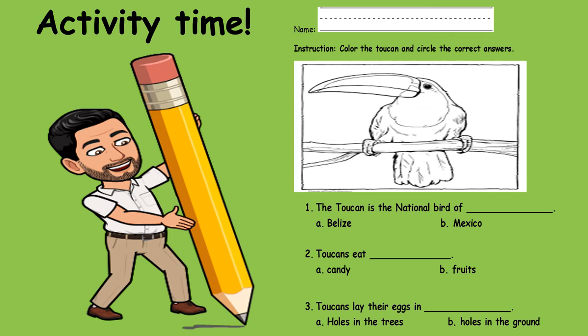Let us go to the instructions. Instruction: Color the toucan and circle the correct answers. Color the toucan and circle the correct answers. So first I want you to color the toucan. So let me get my color. Remember I won't be able to color it properly because I'm using my computer to color, but you will be able to color it properly. So this part of the toucan is black, right, like how it showed in the pictures that I shared with you all just now.